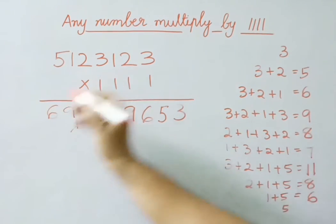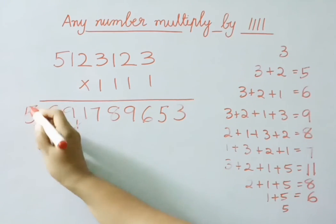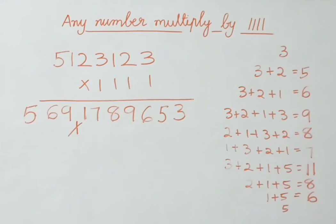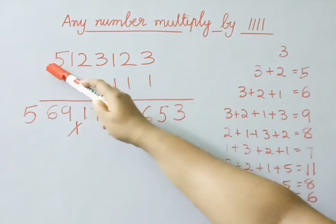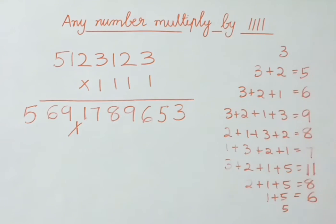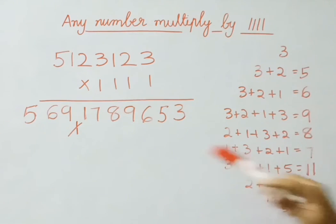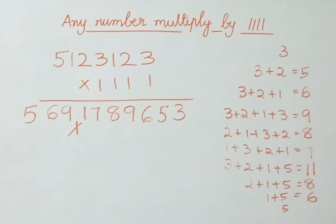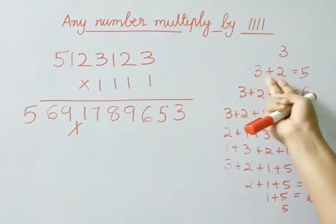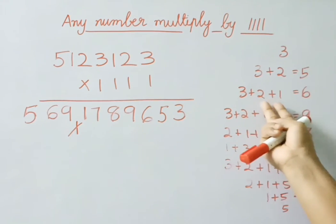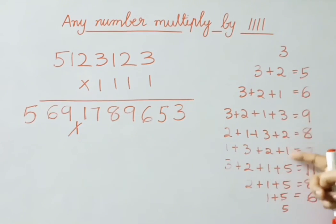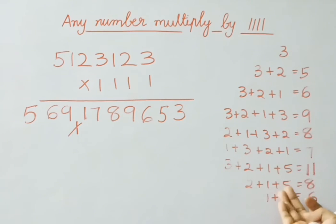Now write down the last digit as it is. So this is our answer. Once again I am explaining this. First this digit and this last digit we will write the same — so 3 and 5 we have written as it is. Then we will add 2 digits from right to left, then 3 digits, then 4 digits onwards, then last 3 digits, last 2 digits, and last digit written normally.